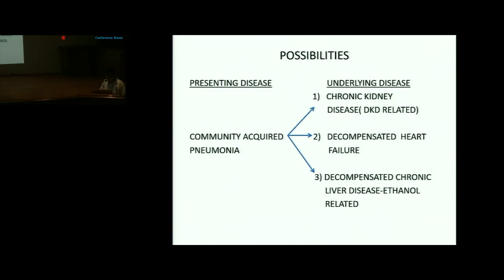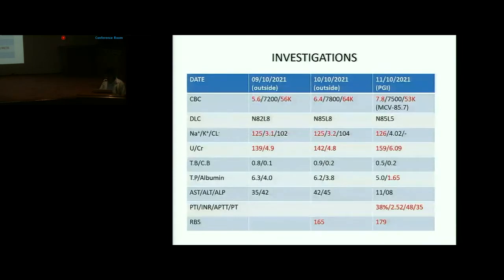Chronic liver disease was also considered given alcohol abuse, though there was no history of abdominal distension, melena, or hematemesis. Investigations from an outside hospital on 9th October showed severe anemia with hemoglobin of 5.6 and platelet count of 56,000. One unit of PRBC was transfused on the 10th.